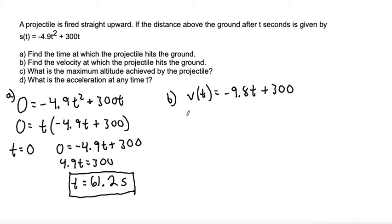Then plugging in our time, v of 61.2 would be negative 9.8 times 61.2 plus 300, which is negative 9.8 times 61.2 is negative 599.76 plus 300 gives us negative 299.76.